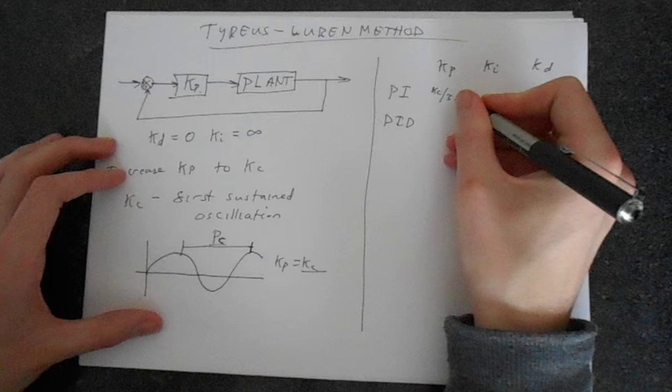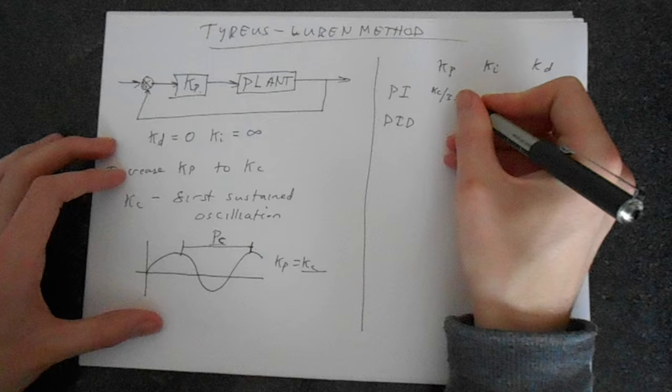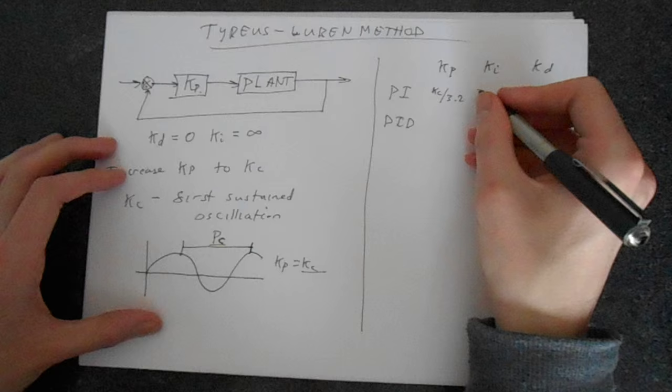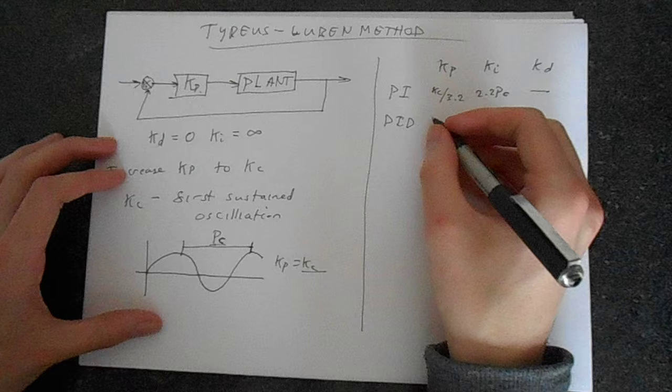You put KC and divide that by 3.2, and that gives you your proportional gain. You've got 2.2 times this PC here, the wavelength.